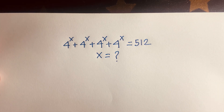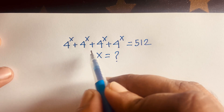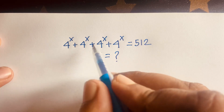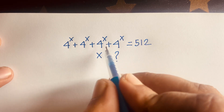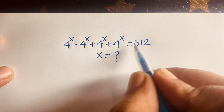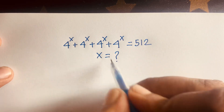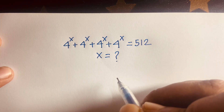Hello everyone. In this video we have solved this math question: 4 to the power x plus 4 to the power x plus 4 to the power x plus 4 to the power x is equal to 512. And x is equal to what?